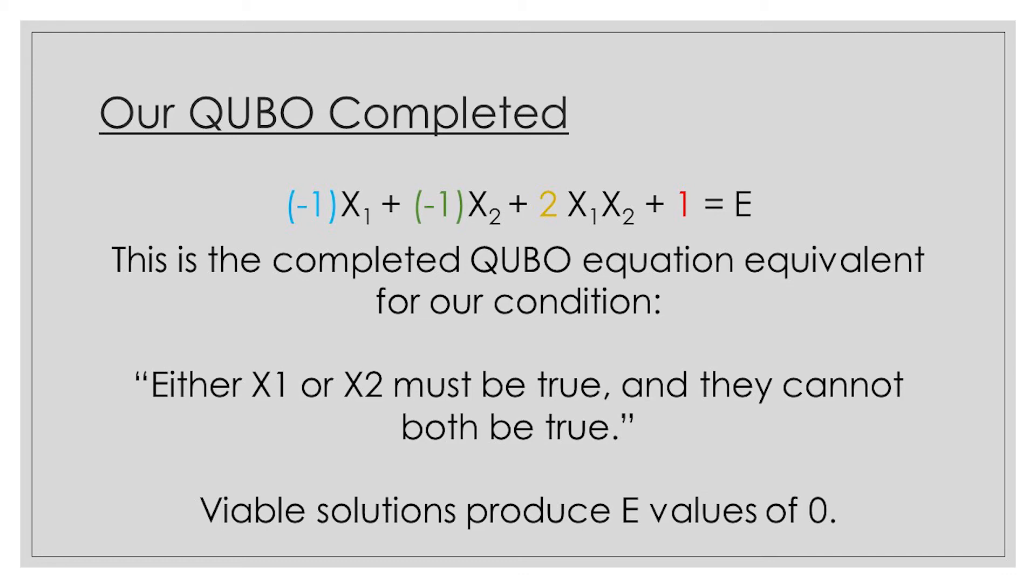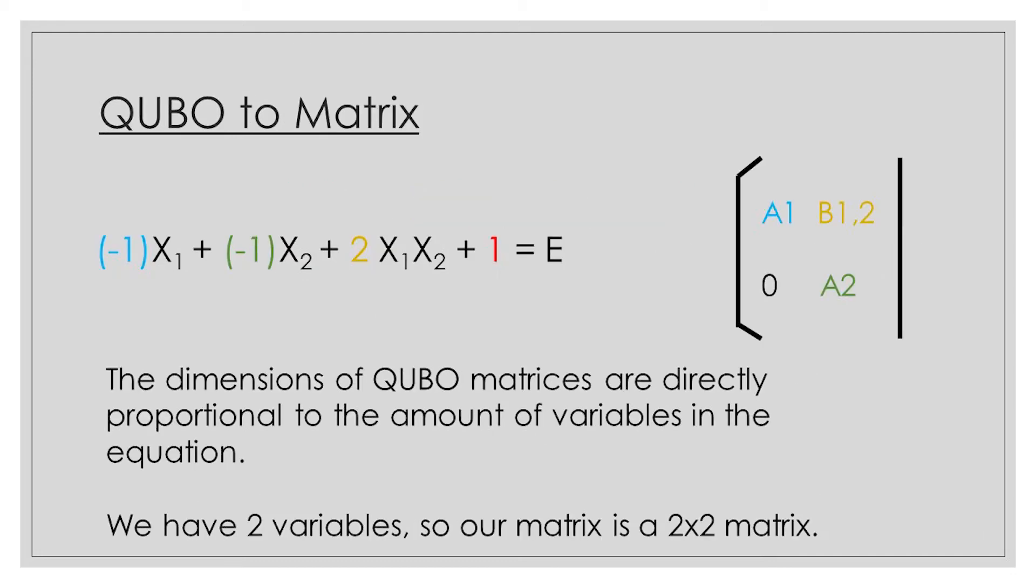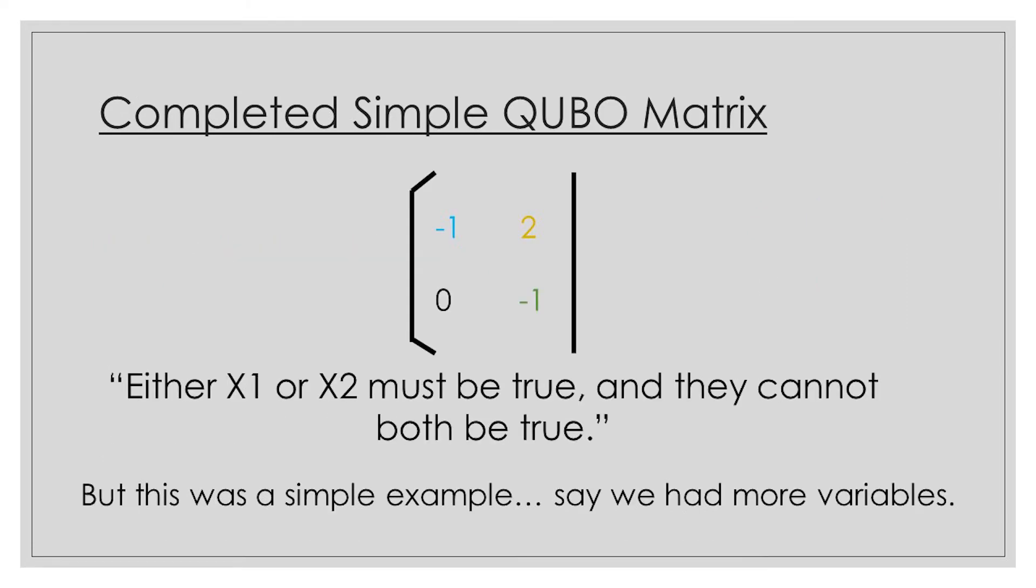But we've got to take one more step before we're actually able to run this on a quantum annealer. Quantum annealers can only solve optimization problems when presented with matrices, and those matrices have very specific requirements. The size of an annealer's matrix proportions is directly proportional to the amount of variables in the original constraint. For example, we have two variables in our condition, x1 and x2. Therefore, the matrix we're going to use is a 2 by 2 matrix. Now the values in this matrix might look familiar, and that's because they are. Those values are exactly the same as the ones that we see in our QUBO equation. Since we already know the values for a1, a2, and b1,2, all we have to do is plug them in, and there we have it! Our completed matrix! There it is, the annealer equivalent to our English condition.